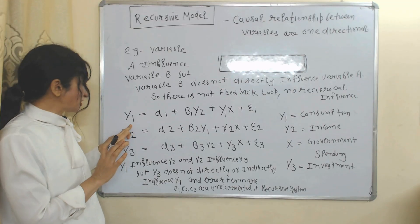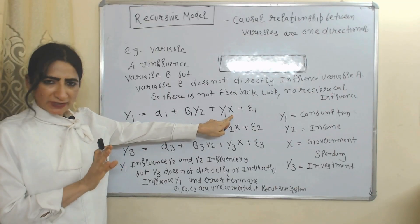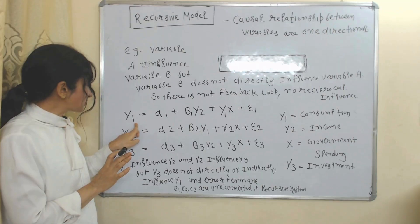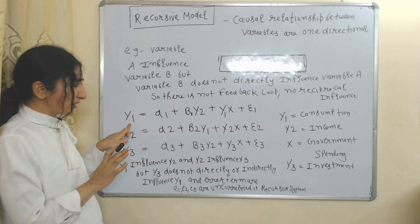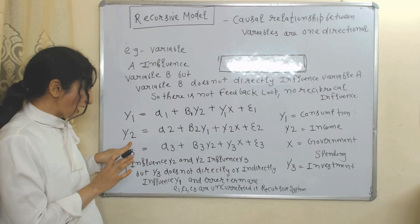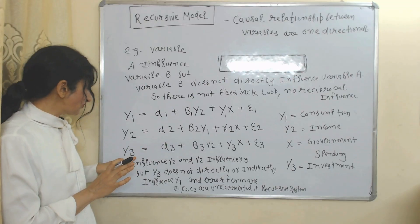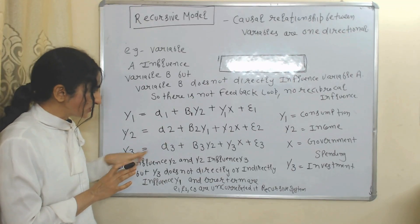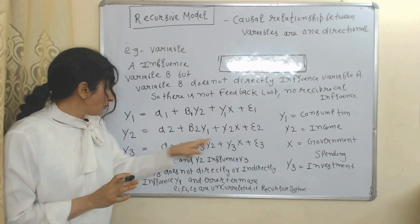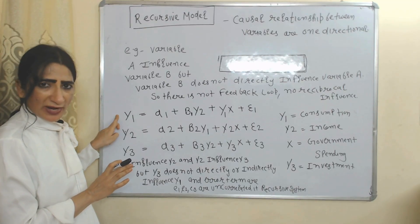Here is an example of a recursive model: Y1 is consumption, Y2 is income, X is government spending, and Y3 is investment. In the first equation, Y1 depends on Y2 and X. In the second equation, Y2 depends on Y1 and X. In the third equation, Y3 depends on Y2 and X. But Y3 does not directly or indirectly influence Y1.